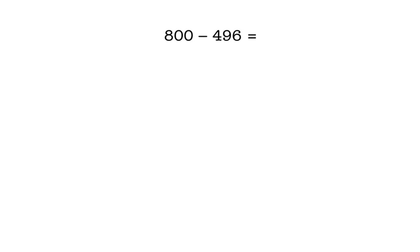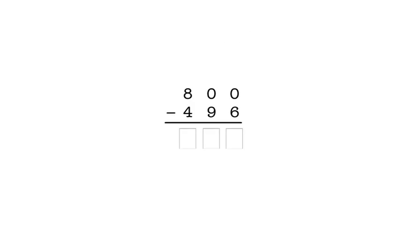800 minus 496. First, we rewrite the problem in columns like this, and we line up the numbers so that the ones place of the first number is above the ones place of the second number. Now, let's subtract the numbers.